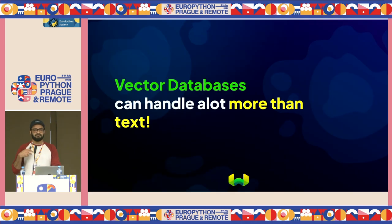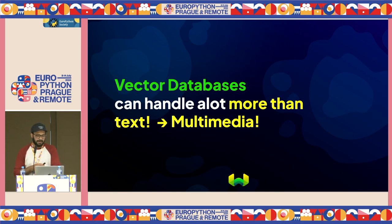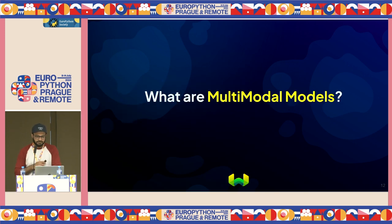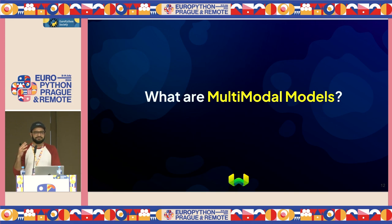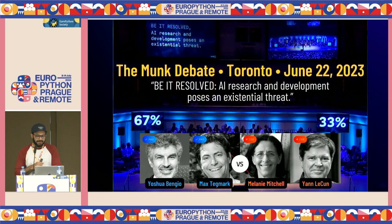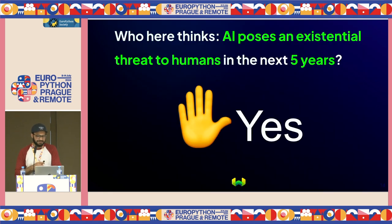This talk is mainly about handling multimodal data. If you've got images, audio, or video files, how do you semantically search over those? The rest of this talk dives into how that happens and what types of models you can use. I want to clarify: when I say multimodal, I specifically mean videos, images, and different multimedia formats — not multilingual. How many people here think that AI is going to pose an existential threat in the next five years?